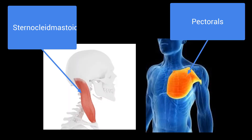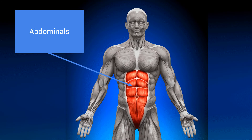The lungs can expand further during exercise due to the use of the pectorals and the sternocleidomastoid. The pectorals are the chest muscles, and the sternocleidomastoid is a muscle at the side of the neck. The contraction of each of these muscles helps to force more air into the lungs. During expiration, the abdominals assist our respiratory system by pulling down the rib cage, which forces air out of the lungs.